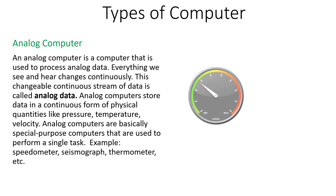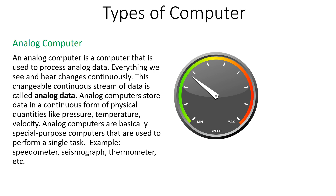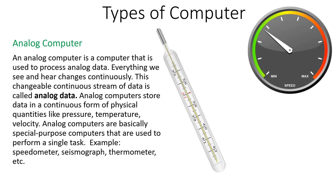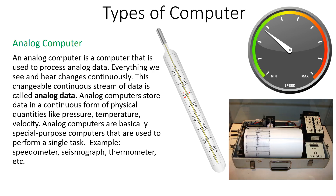For example, the speedometer is designed to measure the speed. Similarly, the thermometer can measure the temperature only. And the seismograph is used to measure the magnitude of the earthquake. So analog computers are special purpose computers that are capable of processing analog signals and giving the result in the analog form.